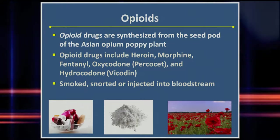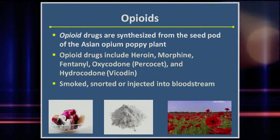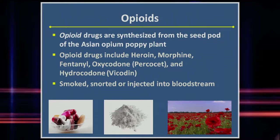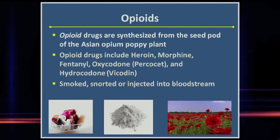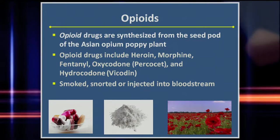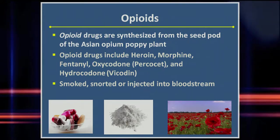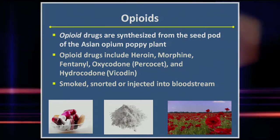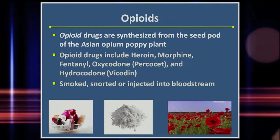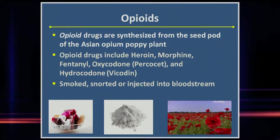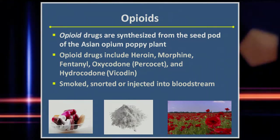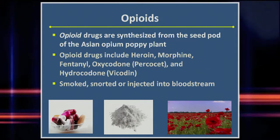Opioid drugs are synthesized from the seed pod of the Asian Opium Poppy Plant. This class of drugs includes heroin, morphine, fentanyl, as well as oxycodone, an ingredient in Percocet, and hydrocodone, an ingredient in Vicodin. They may be in powder, liquid, and pill form, and may be smoked, injected, snorted, or swallowed.